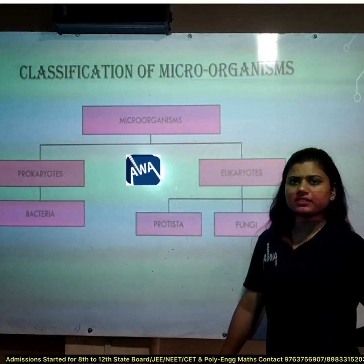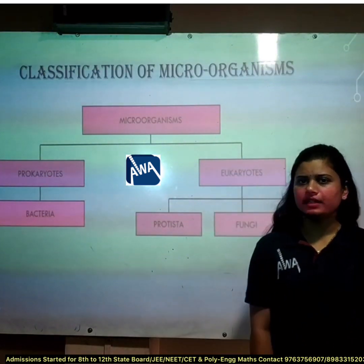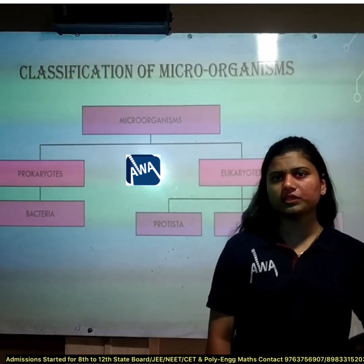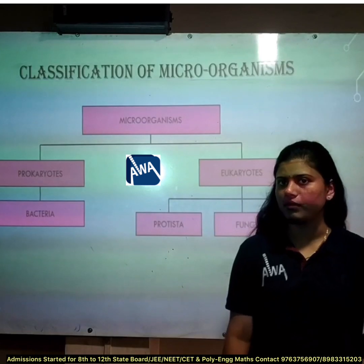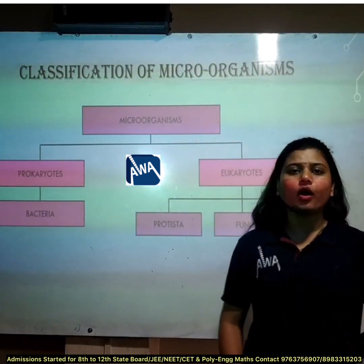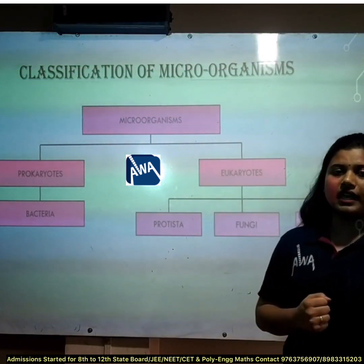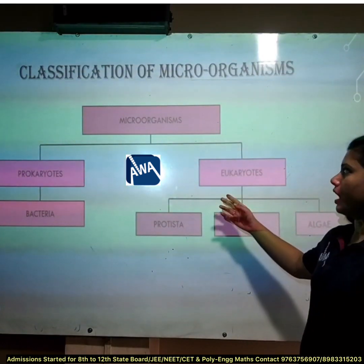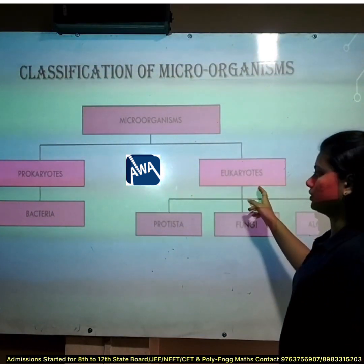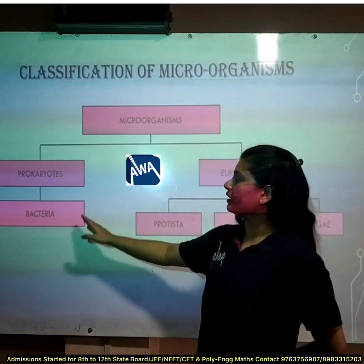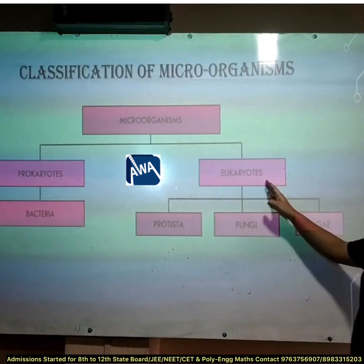Our next topic is classification of microorganisms. Microorganisms are organisms which cannot be seen with the naked eye. Among all living organisms, microorganisms have the largest number. Microorganisms are of two types — prokaryotes and eukaryotes. Bacteria come under prokaryotes. Protozoa, fungi, and algae come under eukaryotes.